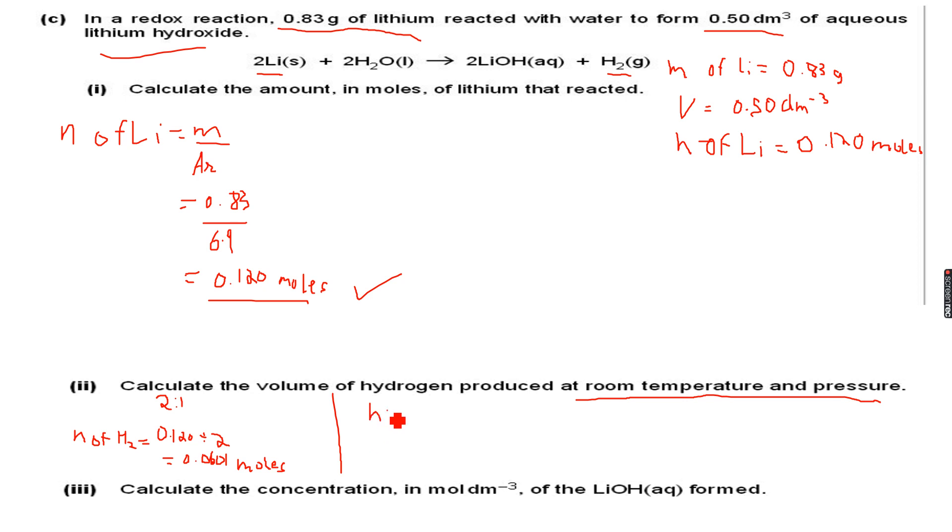I had the formula V = n × 24. When we were talking about the 24 dm³, V is equal to n times 24. So the volume of hydrogen gas produced will be the number of moles of hydrogen gas, which is 0.0601...